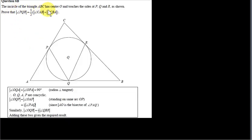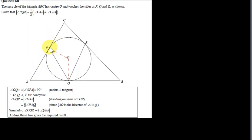The incircle of triangle ABC has center O and touches the sides at P, Q and R. Prove that angle PQR equals half of the sum of angles CAB and CBA. Since O is the incenter, it's the center of the incircle. The line from O to P is perpendicular to the tangent at P, and similarly, the line from O to Q is perpendicular to the tangent at Q. So angle OQA equals angle OPA — they're both 90 degrees.